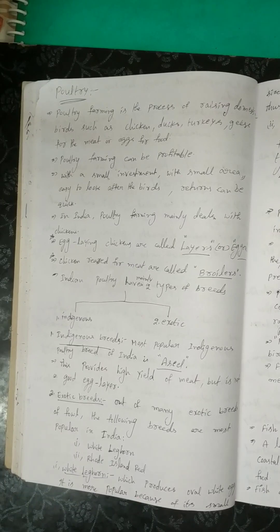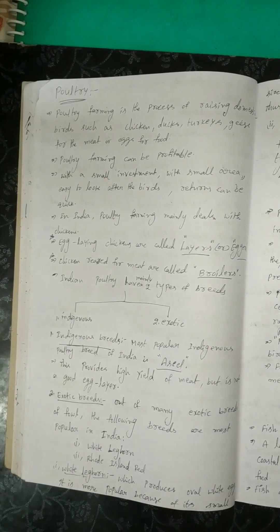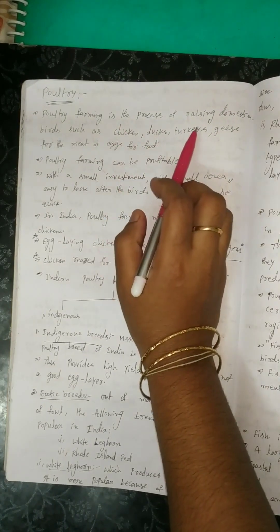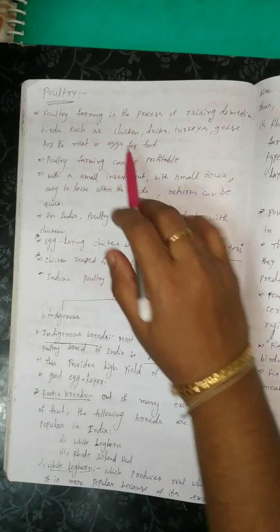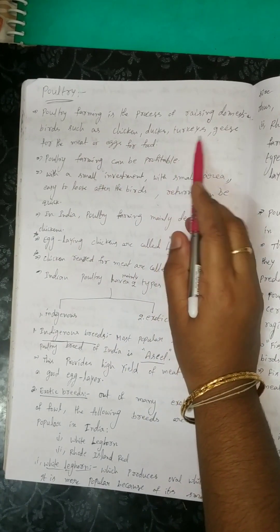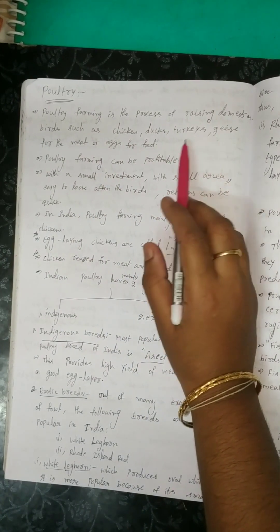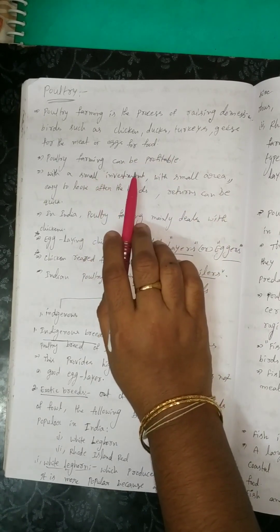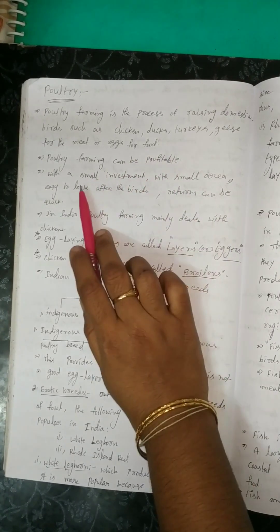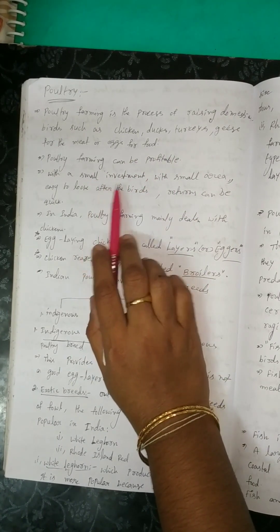Hello everyone, welcome to my channel Book of Science. Today I am teaching about 8th class biology, 9th chapter: food production. In this class we will discuss about poultry. Poultry farming is the process of raising domesticated birds such as chicken, ducks, turkeys, and geese for meat or eggs for food. Poultry farming can be profitable with a small investment.